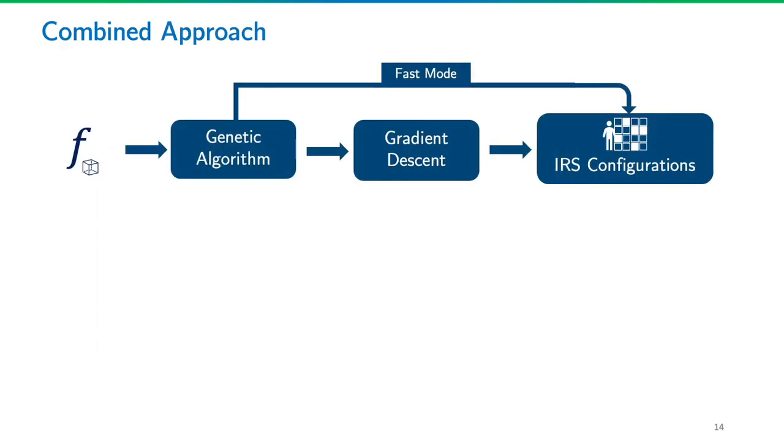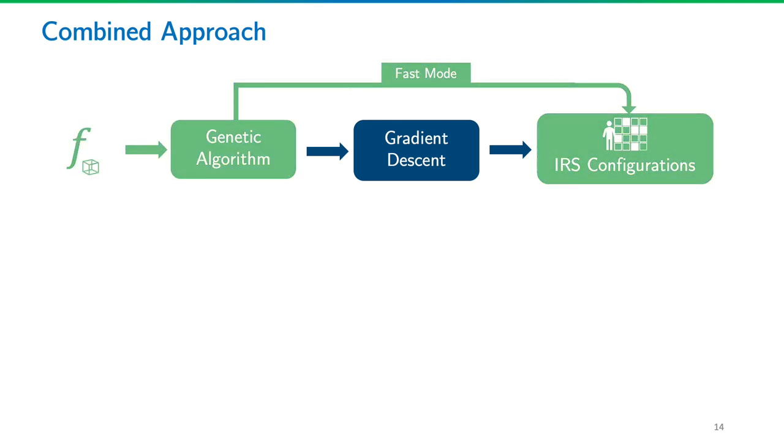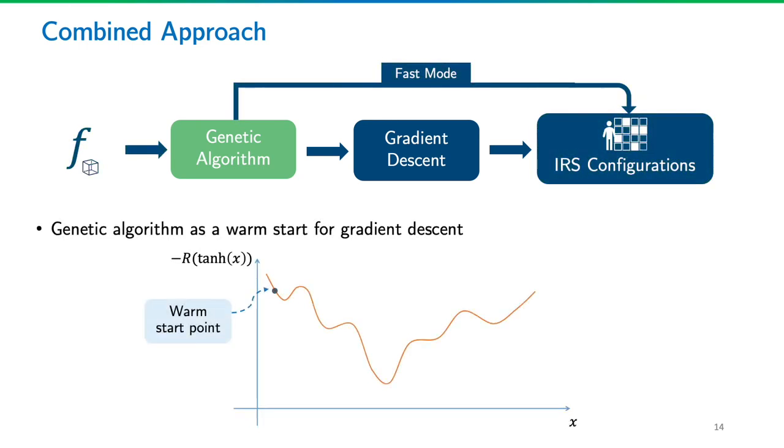This chart is a summary of our configuration search approach. Only using genetic algorithms is the fast mode and was used in our initial simulation. If we want to improve our accuracy by sacrificing some resources and time, we can use the genetic algorithm's output as a warm start to the gradient descent algorithm. Therefore, we are combining the speed of the heuristic with the precision of the gradient descent. This is the precision mode.